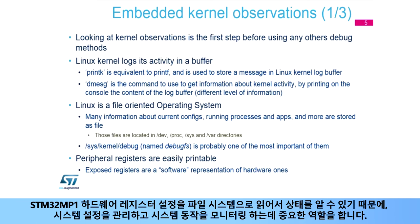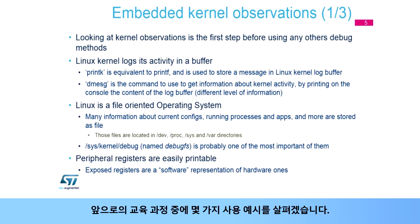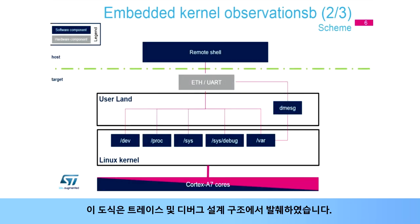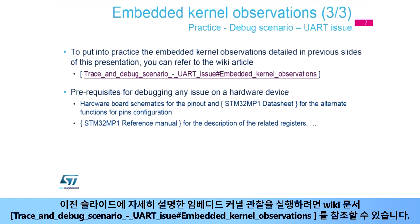The Linux kernel is a file system-oriented operating system, meaning all information about current configurations, running processes, and applications are stored as files, accessible and readable by trace and debug tools. In this file system, you can get a status about STM32MP1 hardware register settings, which is key to manage the system configuration and monitor the system behavior. DebugFS is also an important mounted point on the file system providing more debug information. This scheme focuses on the Linux kernel observation path. To put this into practice, you can refer to the wiki article: Trace and Debug Scenario, UART Embedded Kernel Observations.